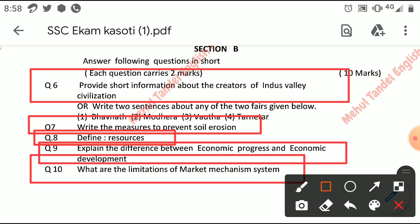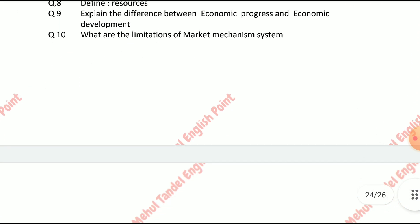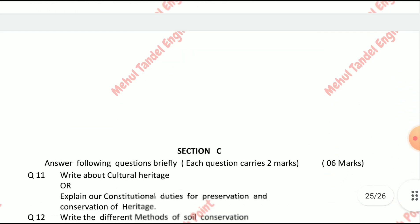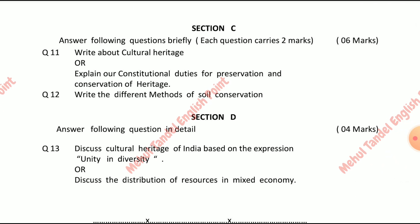Okay friends, Section C — answer the following questions briefly, each carrying two marks. Write about cultural heritage. Explain our constitutional duties for preservation and conservation of heritage. Write the different methods of soil conservation. Section D — answer the following questions in detail. Discuss culture.